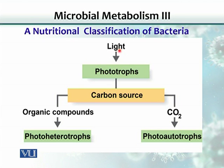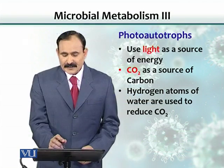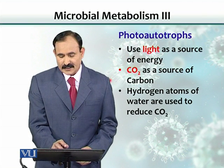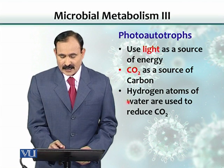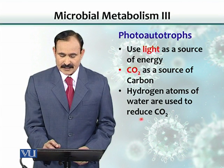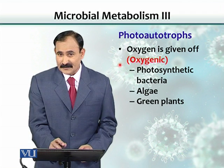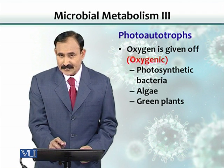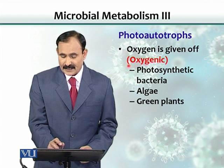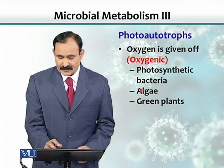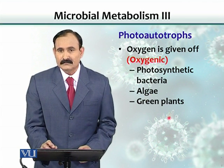If the organism uses light as an energy source, it is called a phototroph. Phototrophs have two subdivisions: if carbon dioxide is used as a carbon source, they are called photoautotrophs; if an organic compound is used as a carbon source, they are called photoheterotrophs. Photoautotrophs use light and carbon dioxide, use hydrogen atoms from water to reduce carbon dioxide — as plants do — and as a result they produce oxygen, which is why they are called oxygenic. Examples include photosynthetic bacteria, algae, and all green plants.